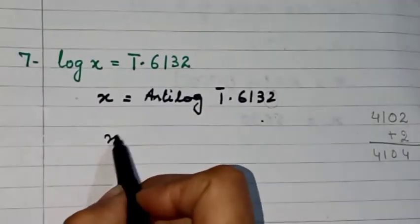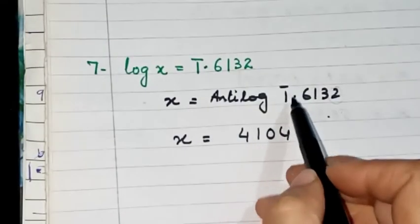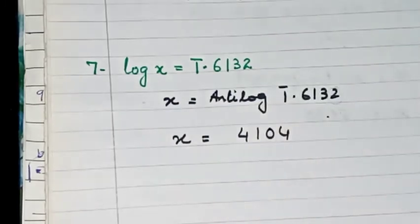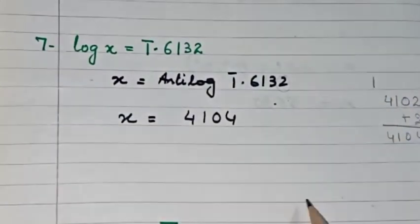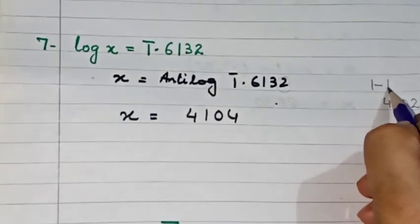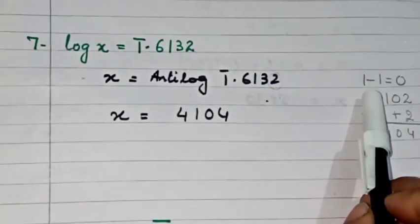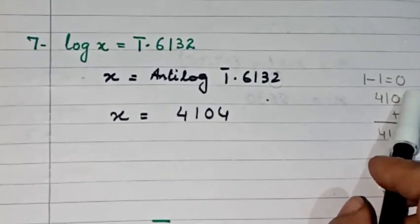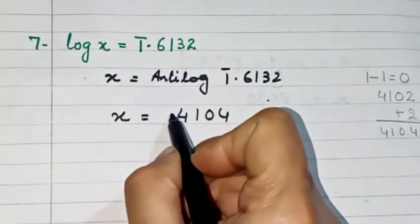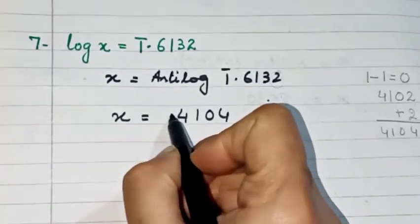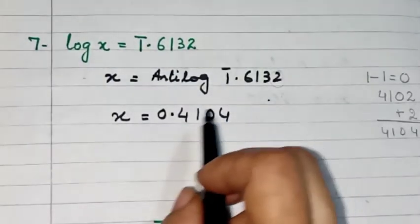So x equals 4104. Now, where do we put the decimal? The characteristic is minus 1. Whenever we have a negative characteristic, we subtract 1 from it: 1 minus 1 equals 0. The result tells us the number of zeros that follow the decimal point. Since it is 0, we put no zeros after the decimal — we just place the decimal point and a 0 before it. So our answer is 0.4104.